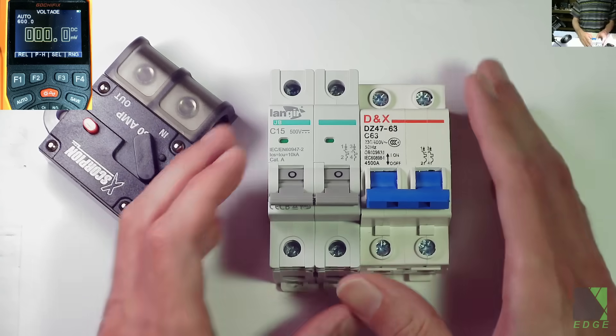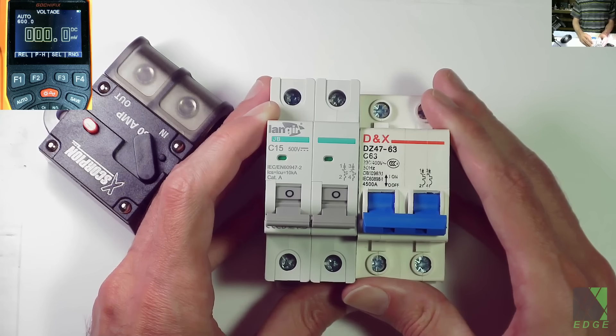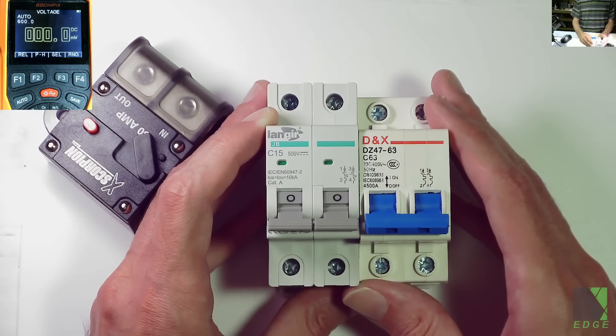The question in today's video is why are DC and AC circuit breakers different? Are they interchangeable and should I only use DC breakers for DC? Here I'm going to answer those questions.